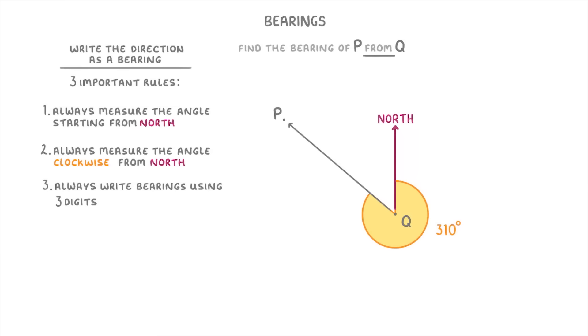Now one practical thing to point out here is that most protractors only go up to 180 degrees rather than 360 degrees, and so you may actually not be able to measure this whole 310 degree angle at once. If this is the case, then it's probably easier to measure this smaller angle, which you'd find as 50 degrees.